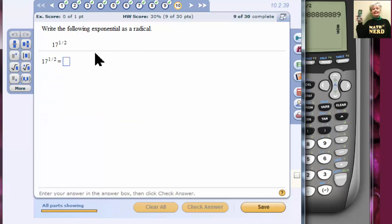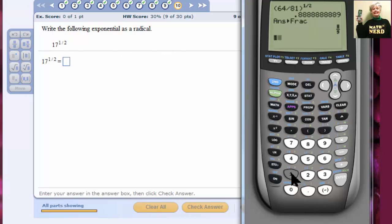Problem 10. 17 to the 1/2 power. Enter. Now, if you were to put that in your calculator, 17 carat to the 1/2 power. Enter. You would get an ugly decimal. And what's more, if you tried to math frac it, you could not. This is something we call an irrational number. And it cannot be expressed exactly.